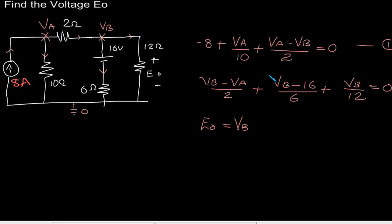By solving these two equations with two unknowns, we can find out the value of Vb, and hence we can find out the value of Eo. The numerical part I will leave it to you. Thank you.